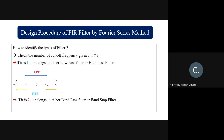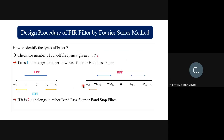If the number of cutoff frequencies given is two, it belongs to either a band pass or band stop filter. The range −π to +π is segmented with two cutoff frequencies ωc1 and ωc2. If Hd(e^(jω)) is defined for −ωc2 to −ωc1 and ωc1 to ωc2, it is a band pass filter. If it is defined for −π to −ωc2, −ωc1 to +ωc1, and ωc2 to π, it is a band stop filter.